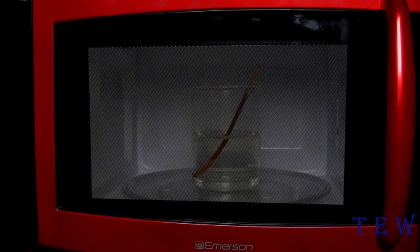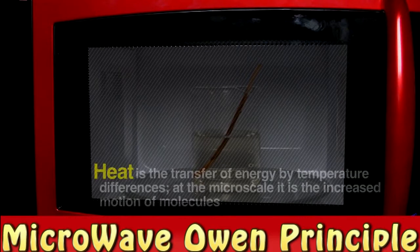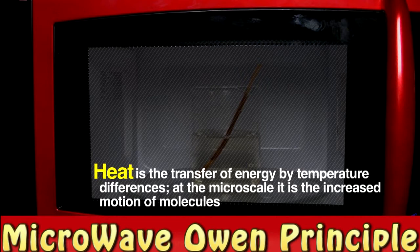In principle, a microwave oven heats no differently than any other type of heat transfer. At a molecular level, heat is a transfer of energy that results in increased motion of the molecules in a substance. Since we aren't quantum sized, we observe this increase in motion as a rise in temperature.